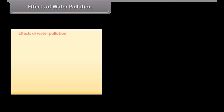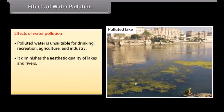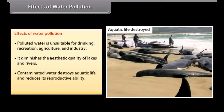Polluted water is unsuitable for drinking, recreation, agriculture and industry. It diminishes the aesthetic quality of lakes and rivers. Contaminated water destroys aquatic life and reduces its reproductive ability. It is also hazardous to human health.